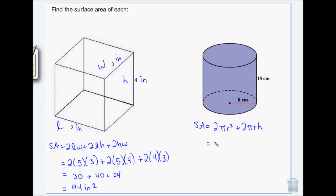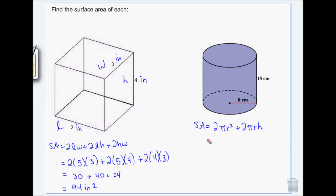For the cylinder surface area: two times 3.14 times the radius squared, plus two times 3.14 times the radius times the height.